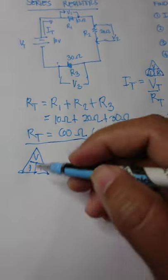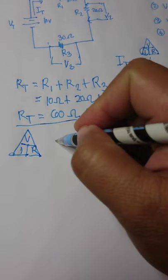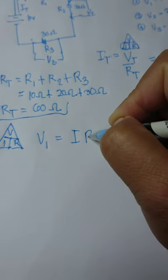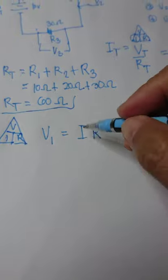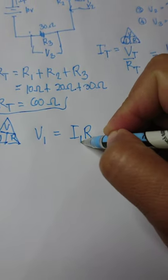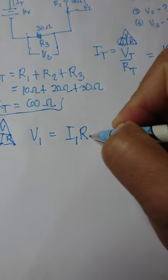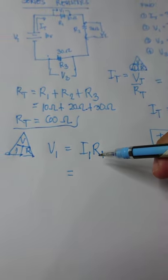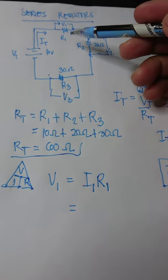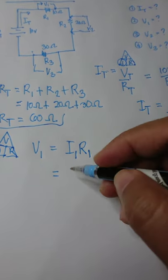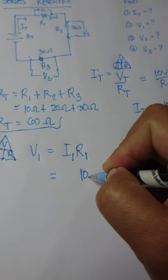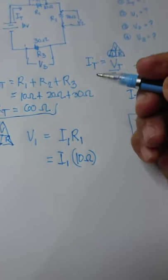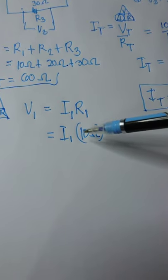In this case, V1. So I and R. Since our subscript is 1, we will be using the current I1 and the resistor R1. We substitute, we already know the value of R1, which is given 10 ohms. How about I1? Let's just write I1 since we do not know yet the I1.